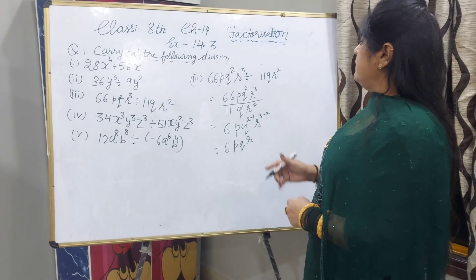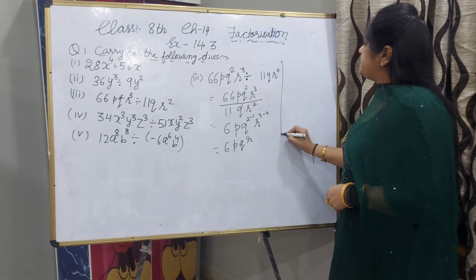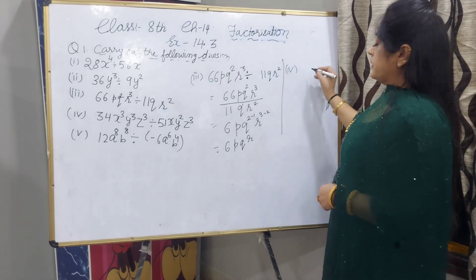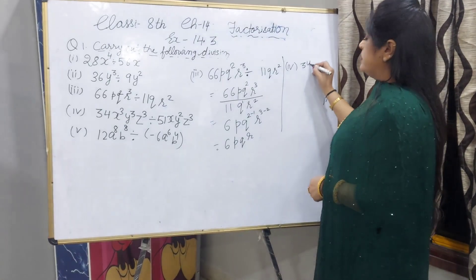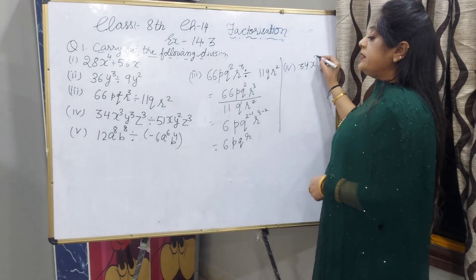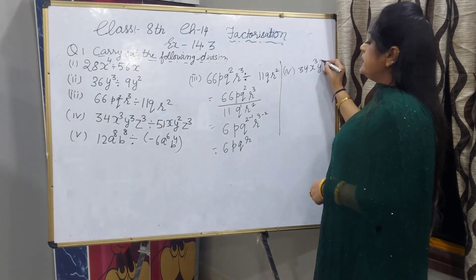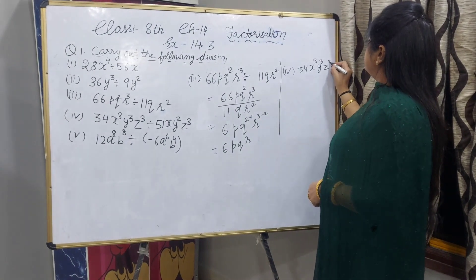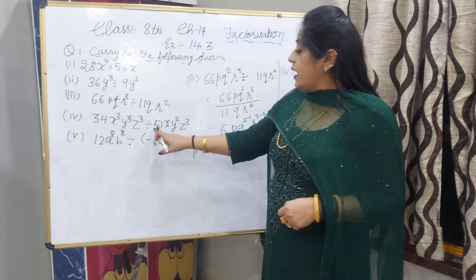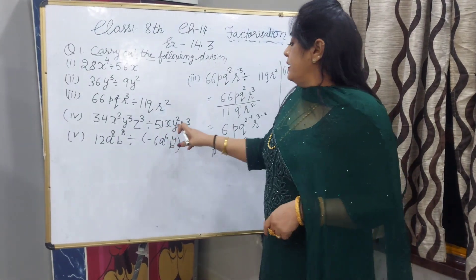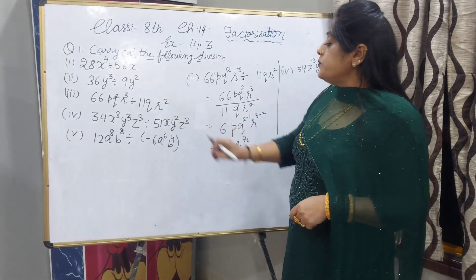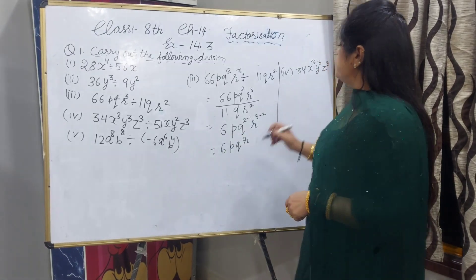Now I will explain fourth part. 34x^3y^3z^3. Now I am writing directly. We have to divide by 51xy^2z^3.